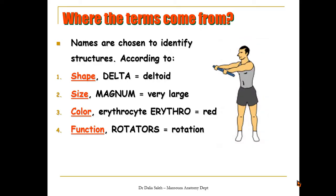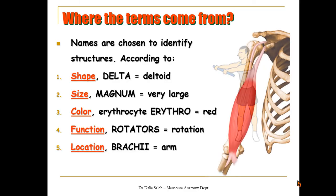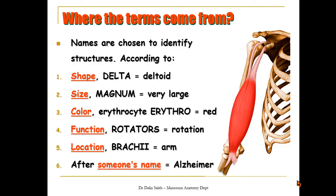We can also name structures according to their color, like erythrocytes or red blood cells; or according to their function, like the rotator muscles which rotate the spine; or according to their location, as in the biceps brachii muscle — 'brachium' means arm, so we know this muscle lies within the arm. Finally, a structure, process, or disease can be named after someone's name, as in Alzheimer's disease.